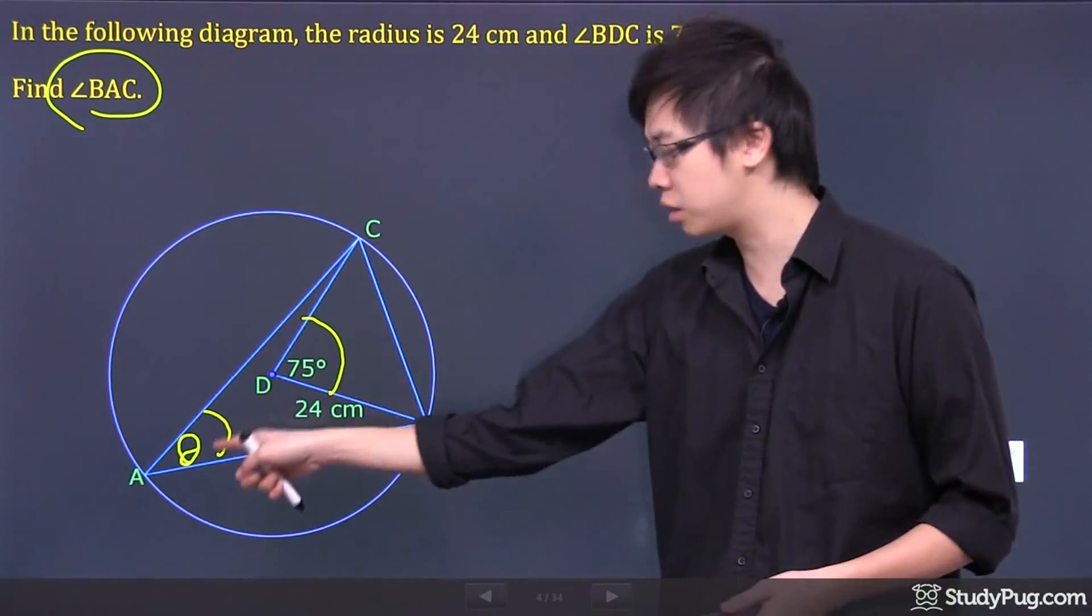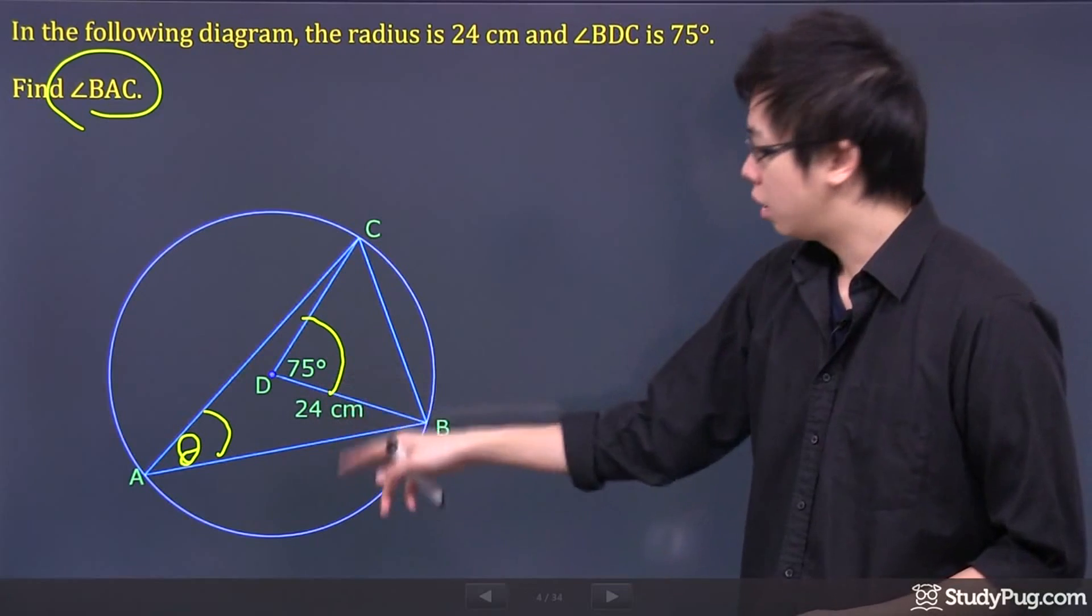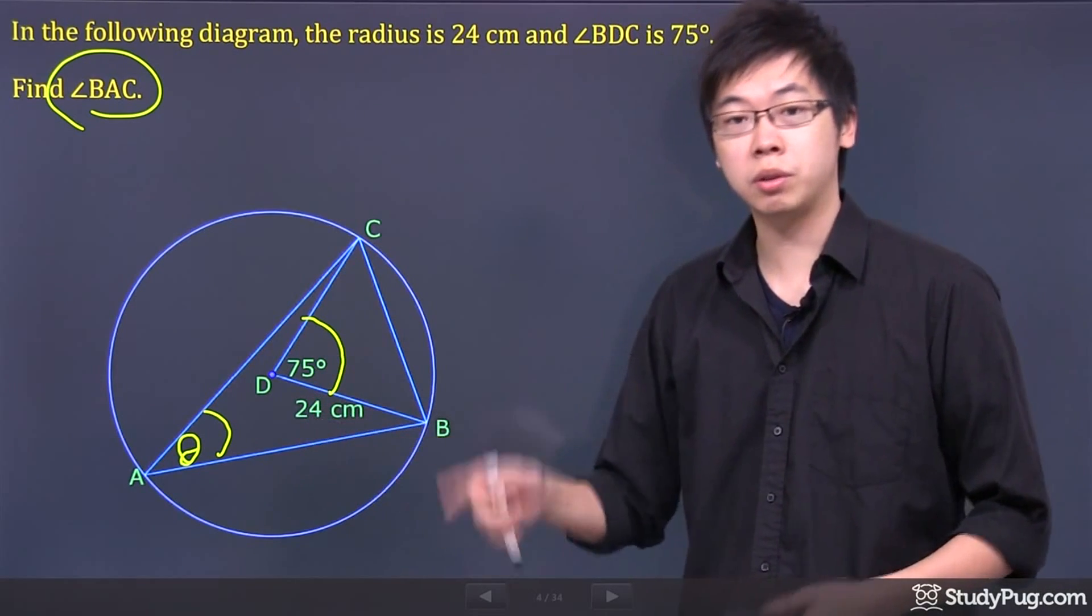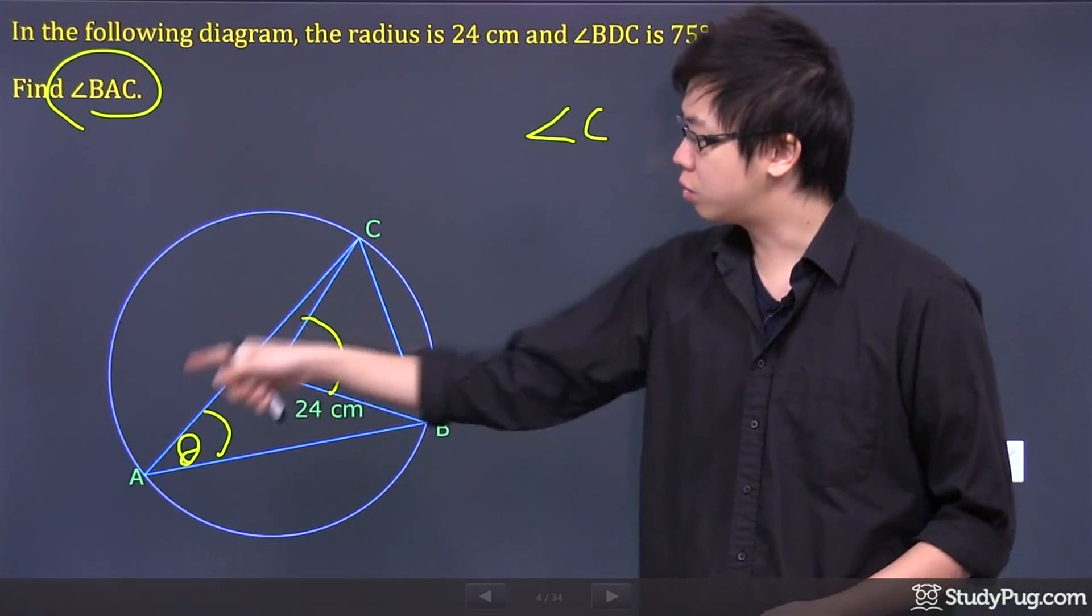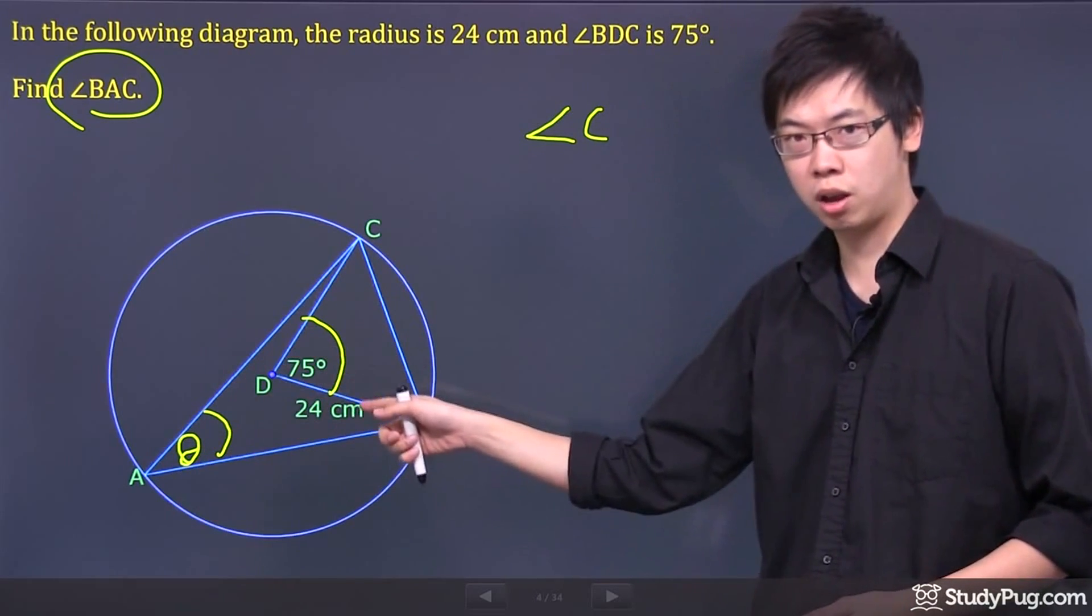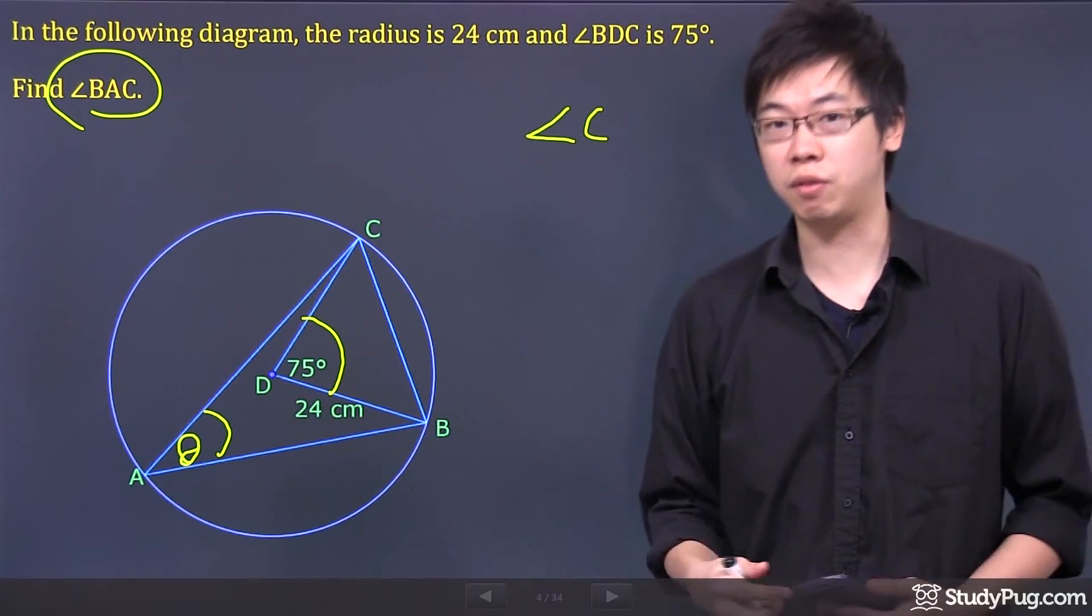Now, there's a relationship between this angle and this angle. The angle 75 is called the central angle. The central angle is called AC, for example. And the inscribed angle of that central angle is only just half of that.